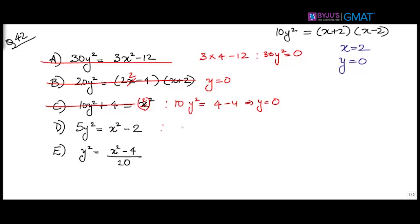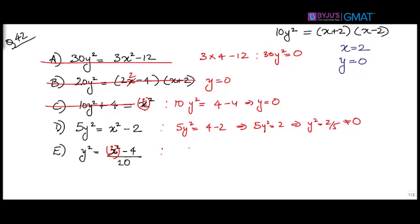For option D, I end up getting 5y² = 4 − 2, so 5y² = 2, meaning y² = 2/5, which is clearly not 0. This is interesting — keep it. Don't mark yet. For option E, putting x = 2 gives the numerator as 4 − 4, so y = 0. Option E is also satisfying — it goes out.